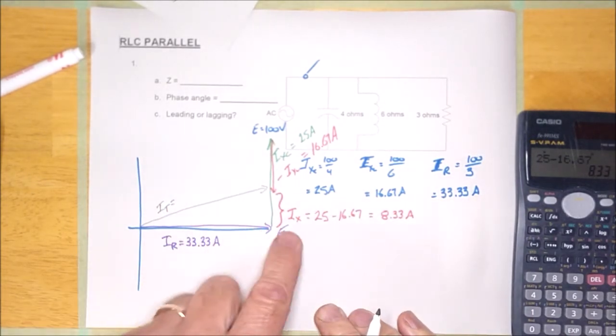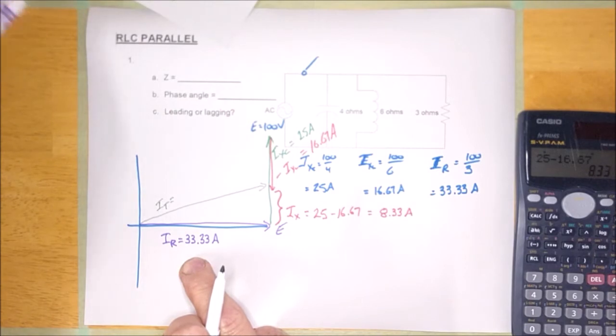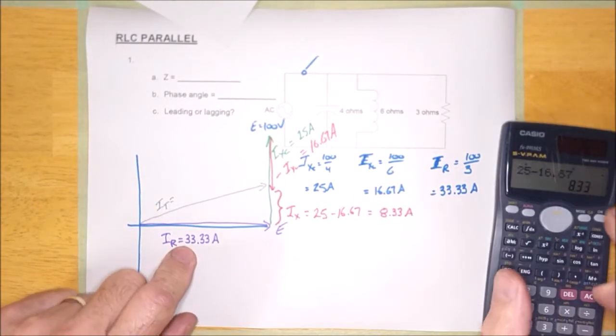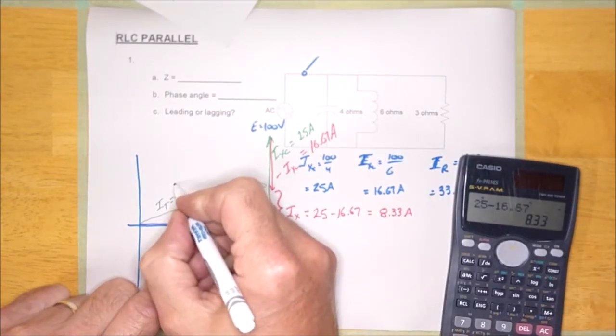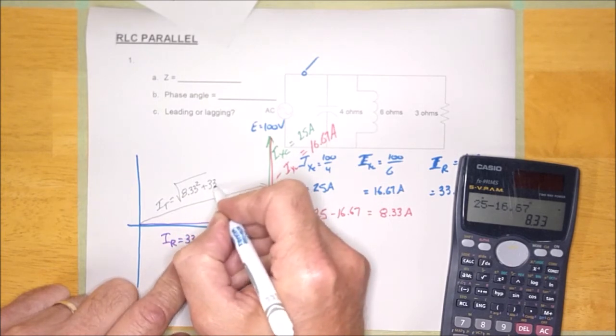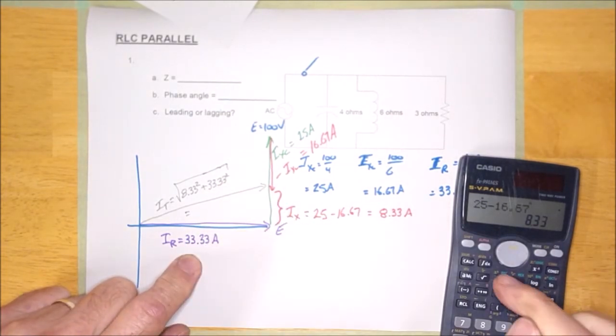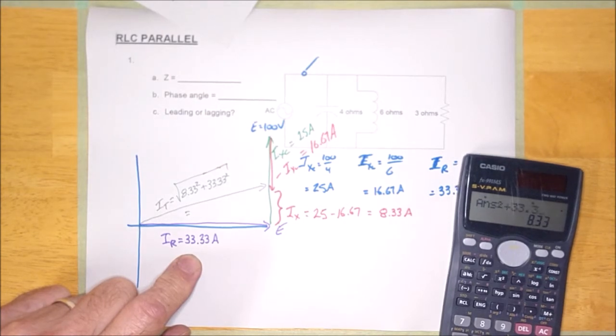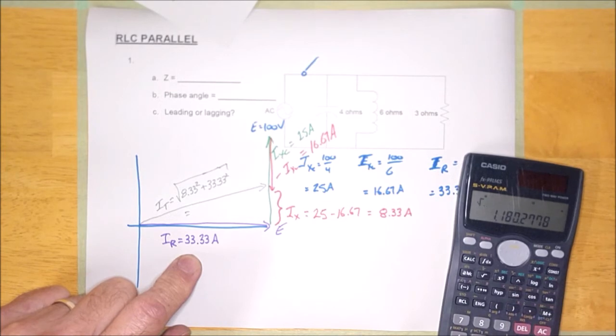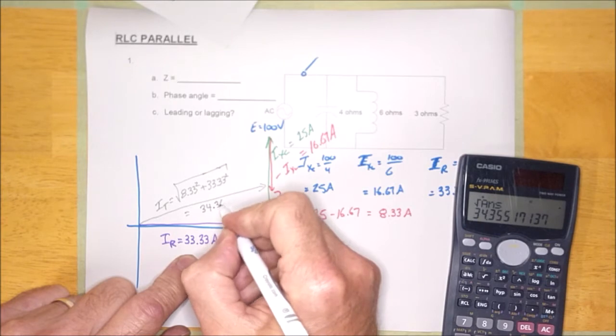And I can calculate our hypothetical I total. It is going to be 8.33 squared plus 33.33 squared. And that's because of the Pythagorean theorem, right guys? It's going to be 8.33 squared plus 33.33 squared. And so let's do that. 8.33 and hit squared here plus 33.33 squared equals root equals looks like it is 34.36 amps.